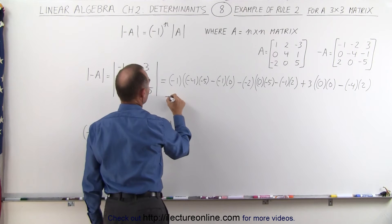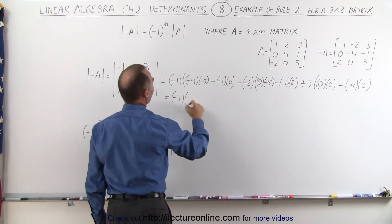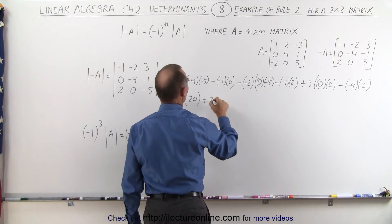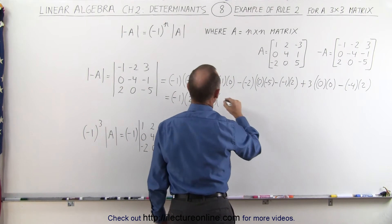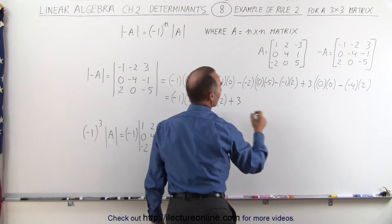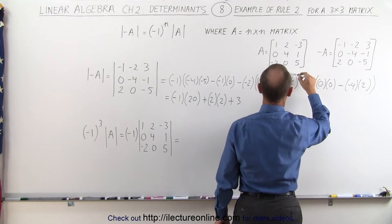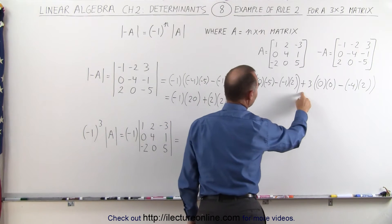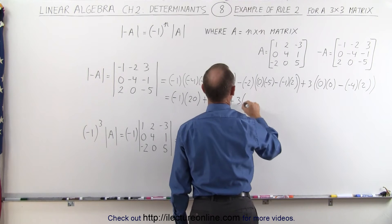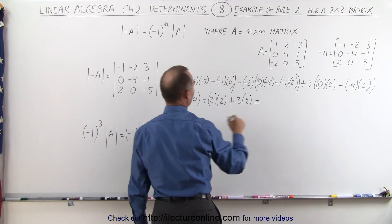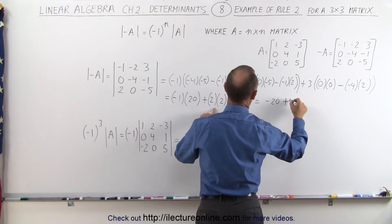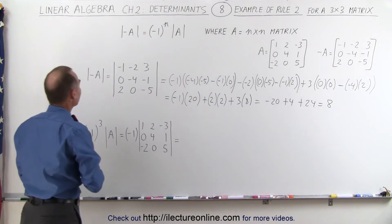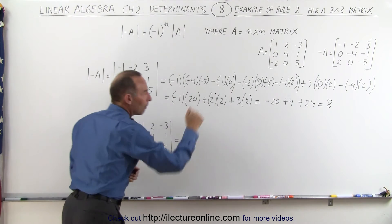That becomes equal to: negative 1 times positive 20 minus 0, then plus 2 multiplied times 0 plus 2, then plus 3 times — that's 0, minus times minus is plus — 3 times 8. Simplifying: negative 20, plus 4, plus 24 gives us positive 8. So the determinant of the negative of matrix A is positive 8.